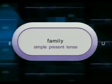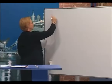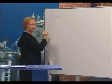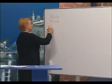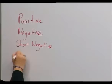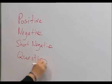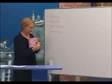Let's review the present simple tense. We'll look at a chart covering four forms: positive, negative, short negative, and question. Let's do these one by one.